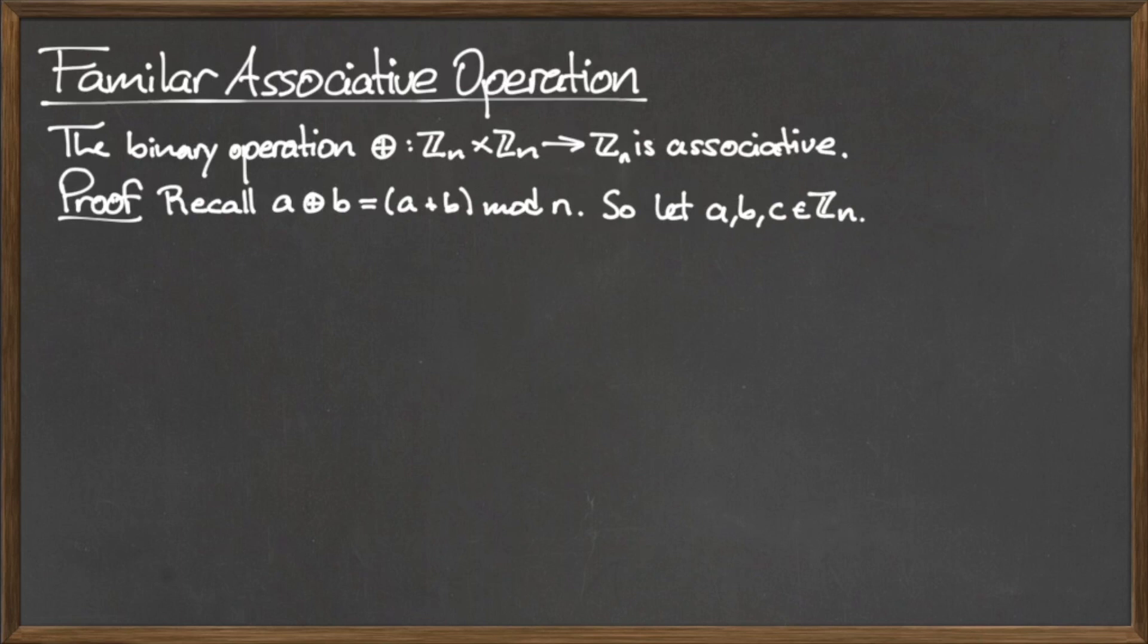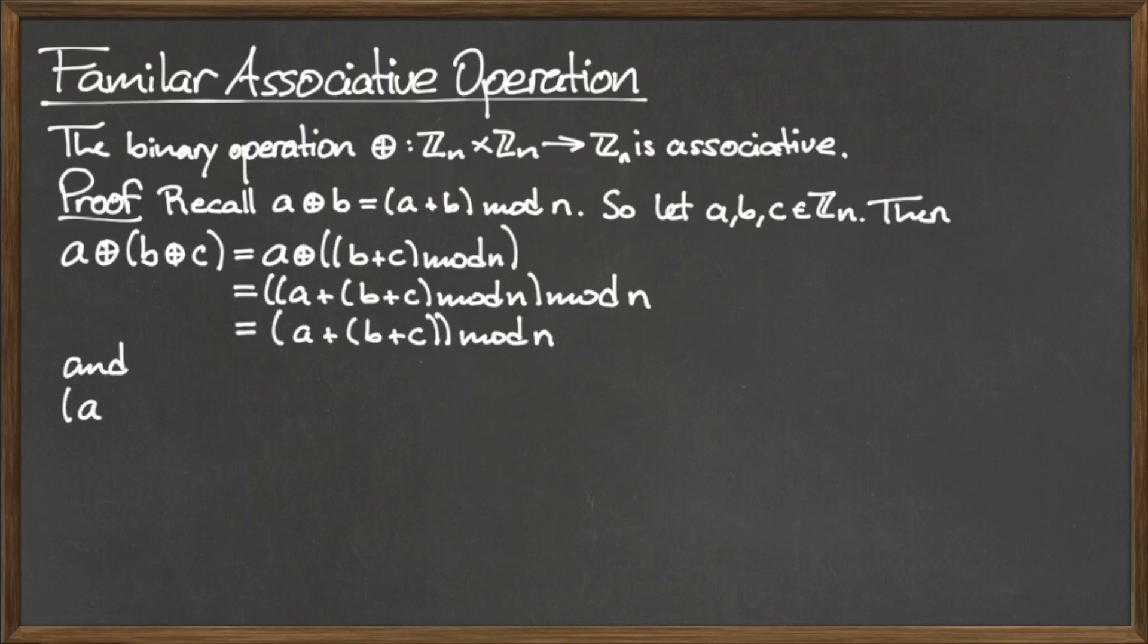We need to show that a o plus the quantity b o plus c and the quantity a o plus b o plus c give the same result. Using the order of operations and the properties of mod n,